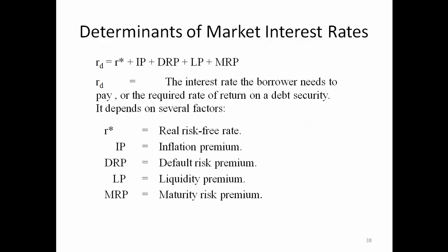Bond price is negatively affected by the market interest rate — higher interest rate means lower price, and lower market interest rate means higher bond price. The interest rate that a borrower needs to pay is determined by five factors: R* the real risk-free rate, IP the inflation premium, DRP the default risk premium, LP the liquidity premium, and MRP the maturity risk premium.